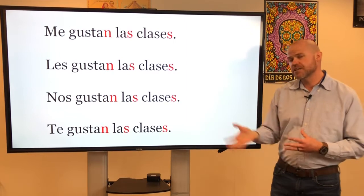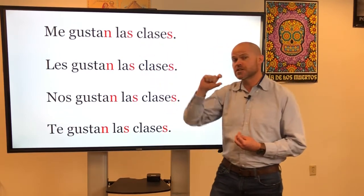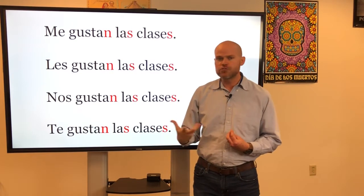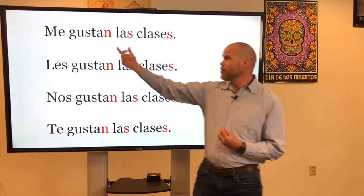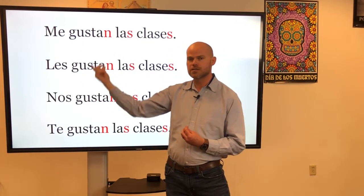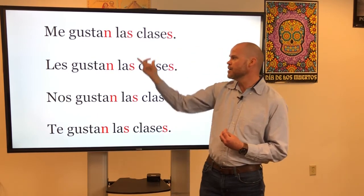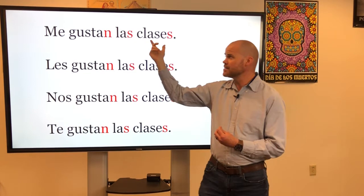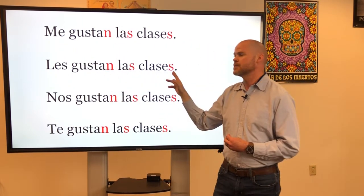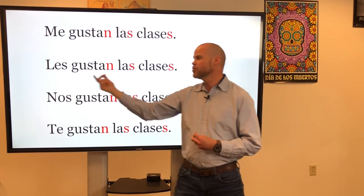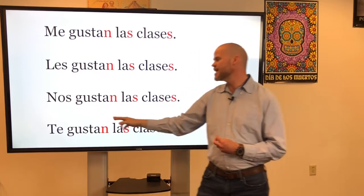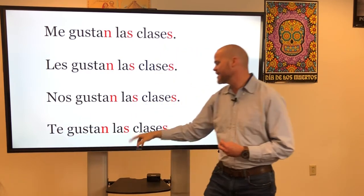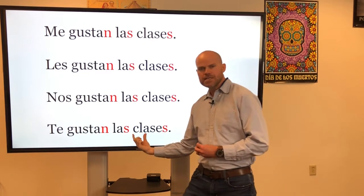If I change la clase to las clases — making it plural — now we have to change the verb to the plural form. Now it's gustan in every single one of these forms, because what we like is plural. For example: me gustan las clases — I like the classes, or the classes please me. Les gustan las clases — they like the classes, or the classes please them. Nos gustan las clases — we like the classes, or the classes please us. Te gustan las clases — you like the classes, or the classes please you. Muy bien.